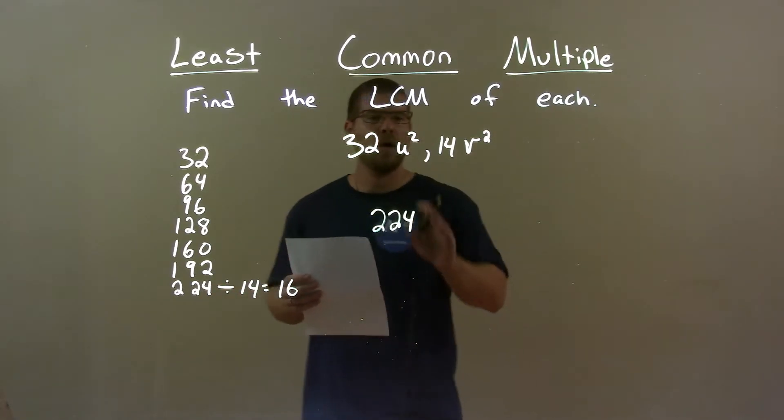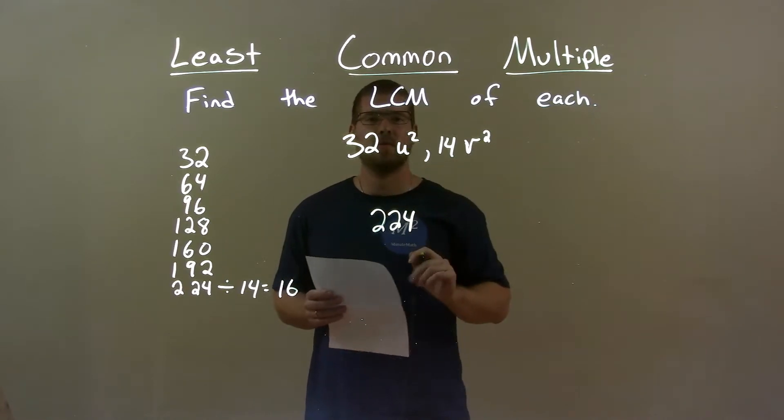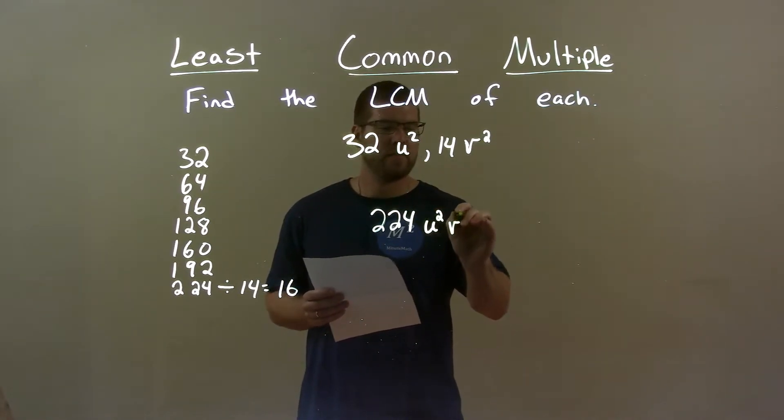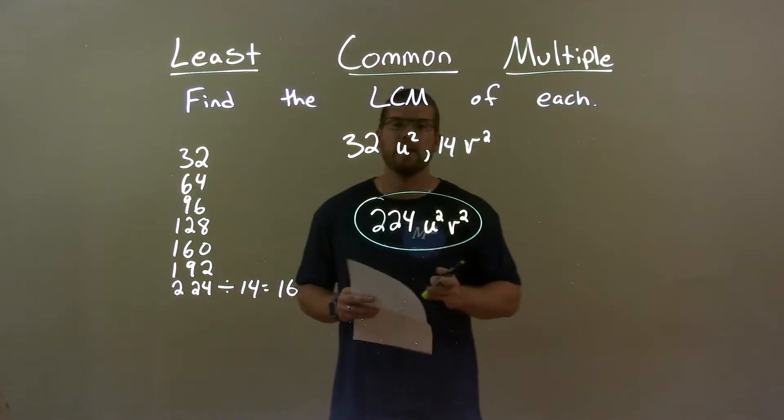Now we have to find our variables. We have to encompass all of our variables. We have two u's here and two v's there. Let's bring them together. We got u squared here and v squared. So my final answer is 224u squared v squared.